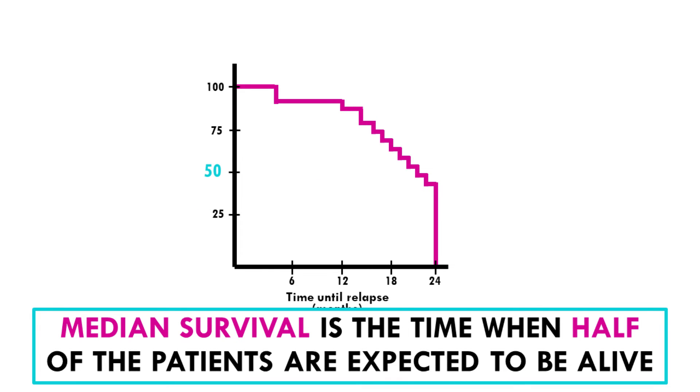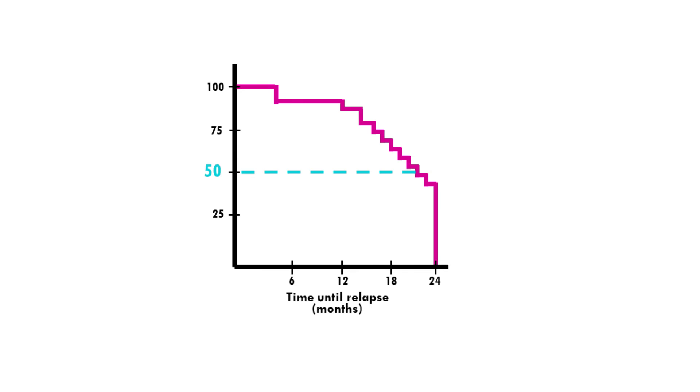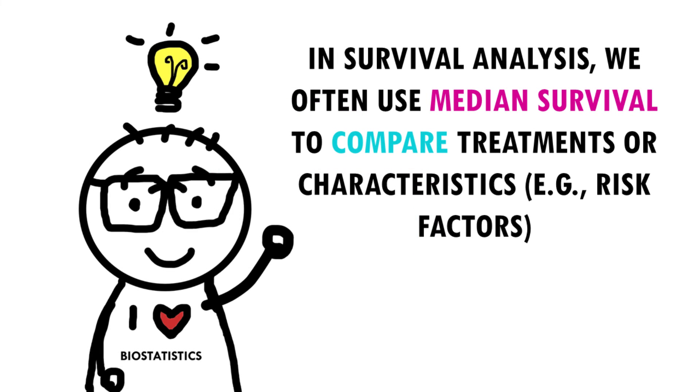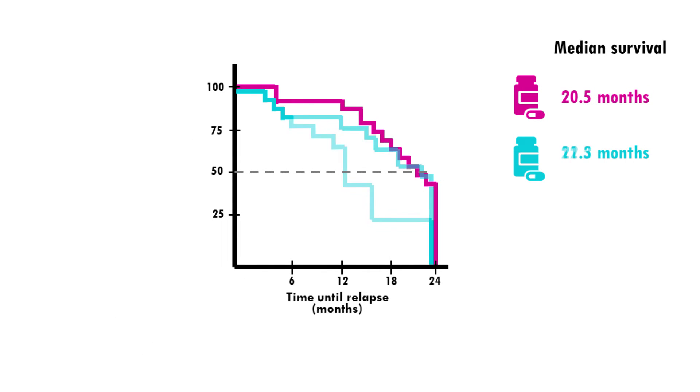Another interesting metric is median survival. Median survival is the time, expressed in months or years, when half of the patients are expected to be alive. It means that the chance of surviving beyond that time is 50 percent, and it can be a very useful summary measure. Median survival can be read from the Kaplan-Meier curve at the 50 percent survival mark on the y-axis. If you draw a vertical line, you can compare the median survival between two treatments.